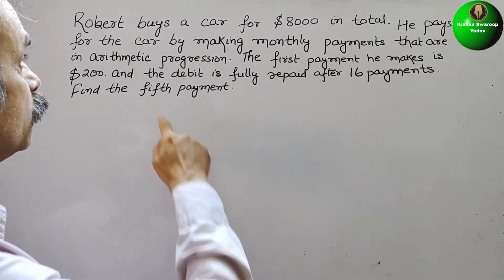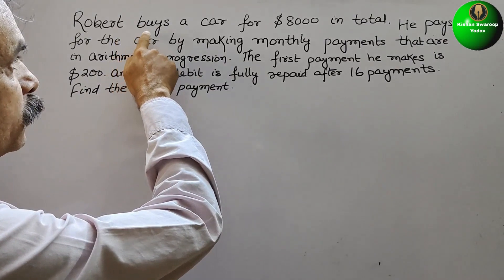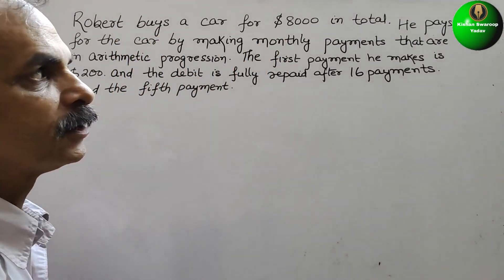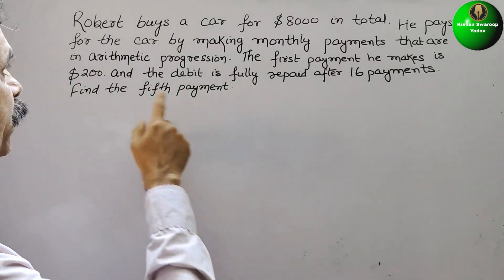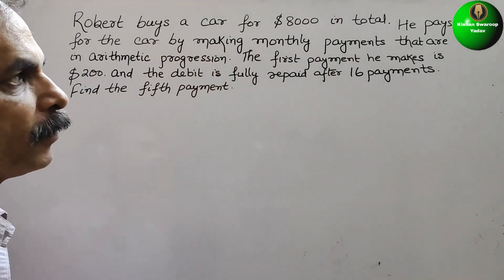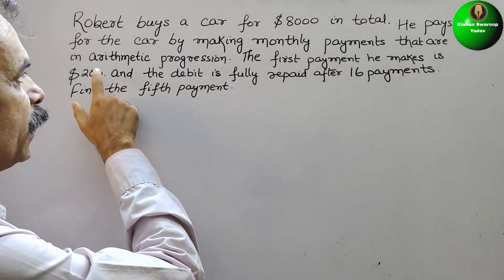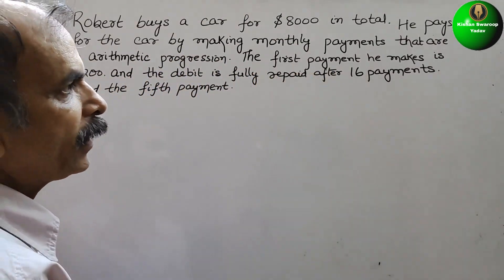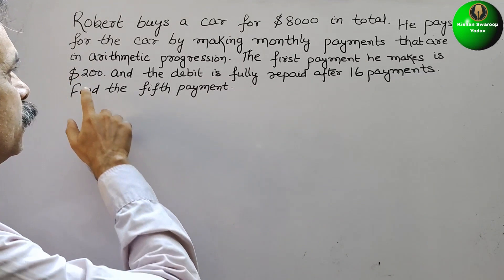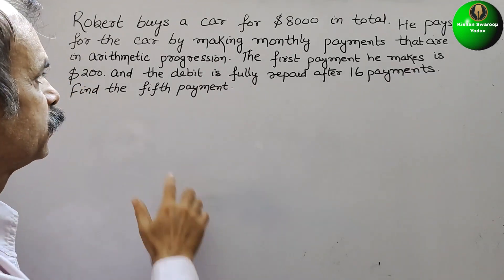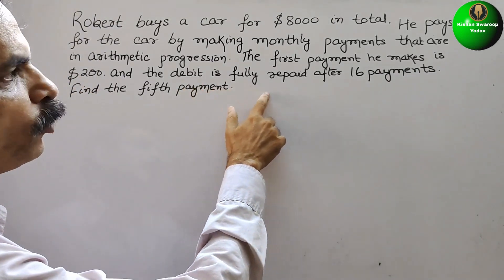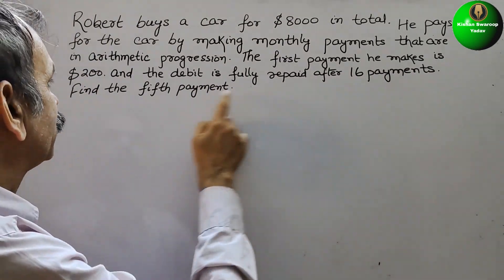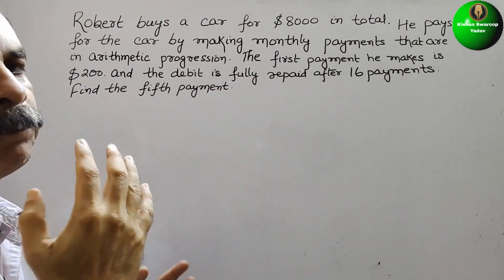Your question is: Robert buys a car for $8,000 in total. He pays for the car by making monthly payments that are in arithmetic progression. The first payment he makes is $200, and the debt is fully repaid after 16 payments. Find the fifth payment.